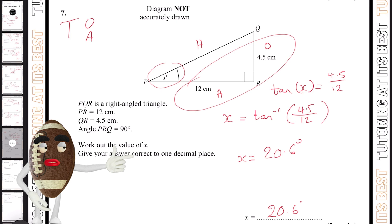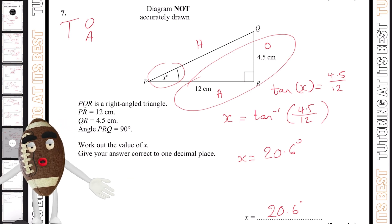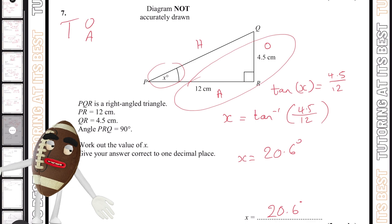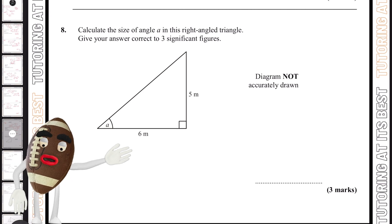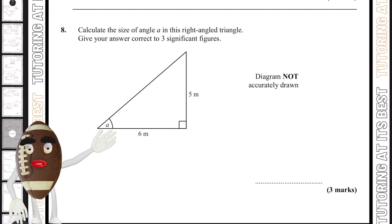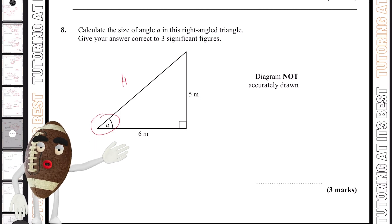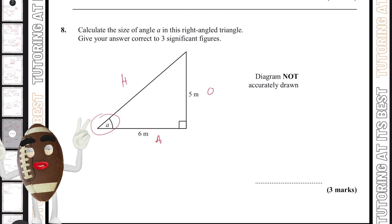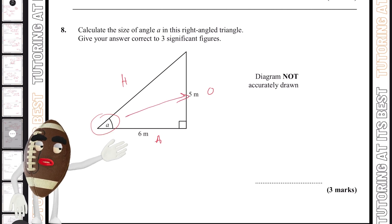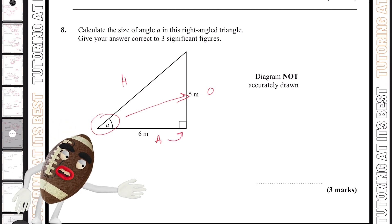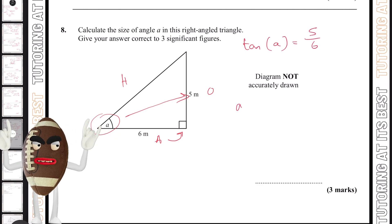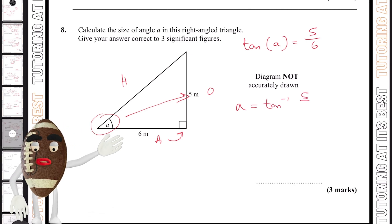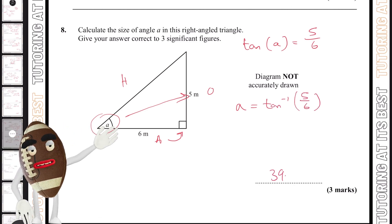Pause the video at any given time, attempt the question, and press play when you're ready. Question eight: calculate the size of angle A in this right-angled triangle. We'll label our sides: hypotenuse, opposite, and adjacent. Remember, opposite is always opposite the angle, and the adjacent is always next to the right angle. So we'll have tan A equals 5 over 6. In order to get A, we use tan inverse of 5 over 6, which gives us 39.8 degrees.